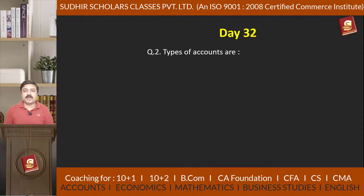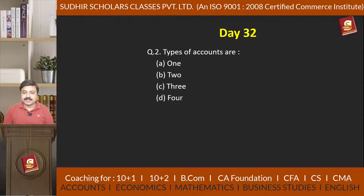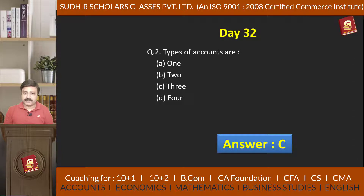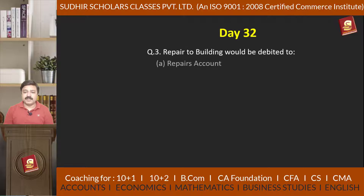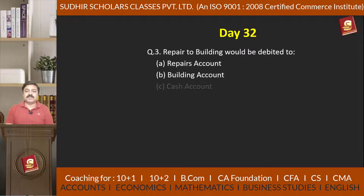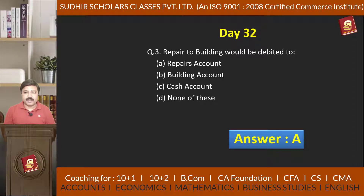Question 2: Types of accounts — we have 4 options, and the right answer is option C. Now question number 3: Repairs to building would be debited to — 4 options, and the right answer is option A: Repair account.